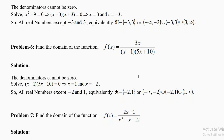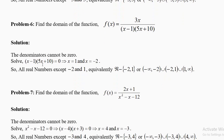Find the domain of f(x) = 3x / [(x − 1)(5x + 10)]. Division by 0 is not allowed. Set x − 1 = 0 → x = 1. Set 5x + 10 = 0 → x = −2. The domain is all real numbers except −2 and 1. Write ℝ − {−2, 1}, or in interval form: (−∞, −2) ∪ (−2, 1) ∪ (1, +∞), with round brackets since neither −2 nor 1 is allowed.